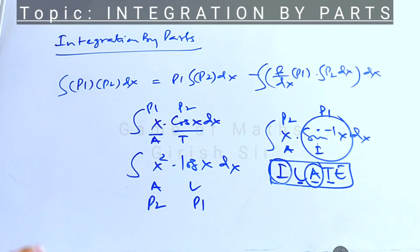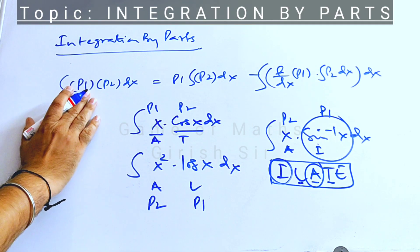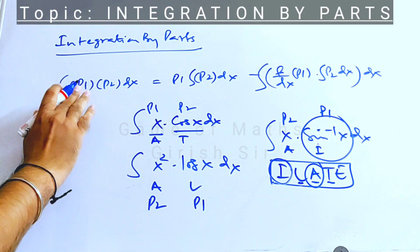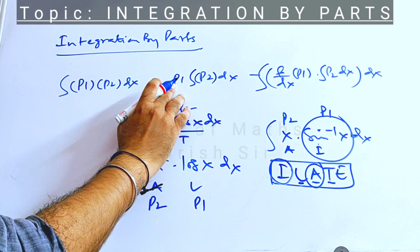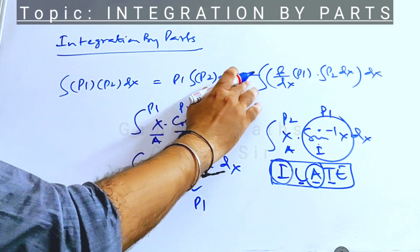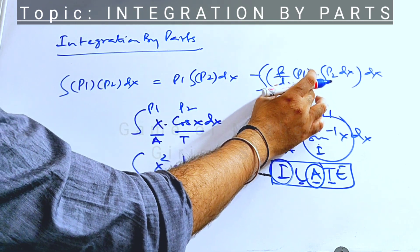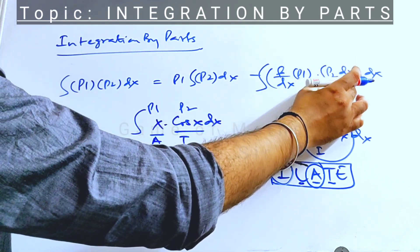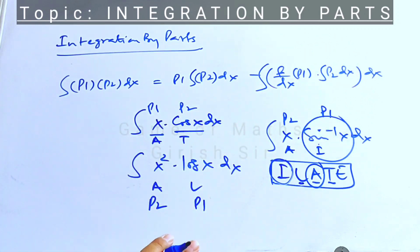Once you have made the selection of P1 and P2, this is how we integrate the product. You take P1 out of the integral and integrate only part two, then subtract the derivative of part one multiplied by the integral of part two, and that resulting product is integrated again.